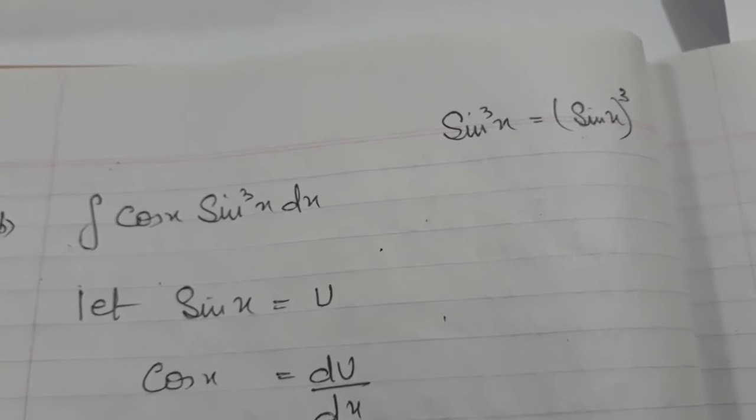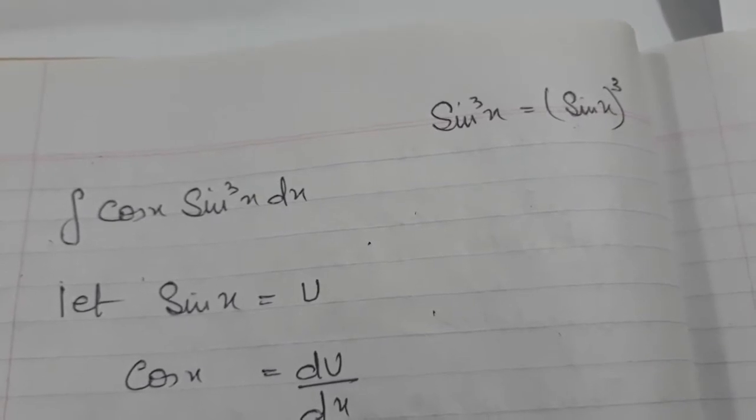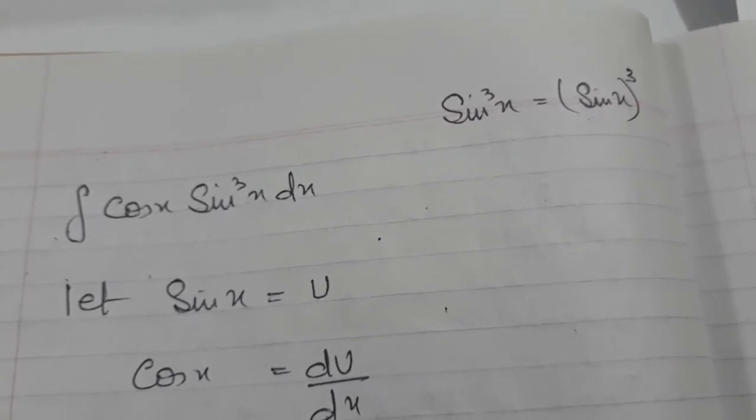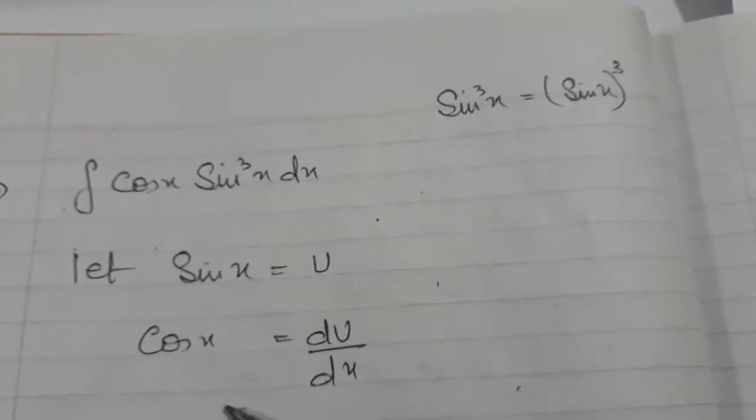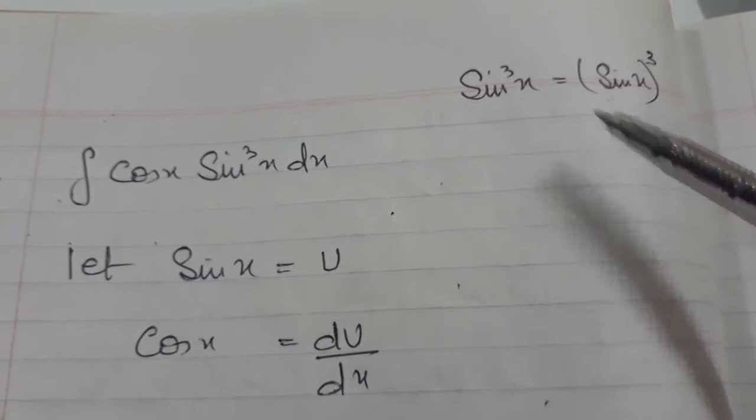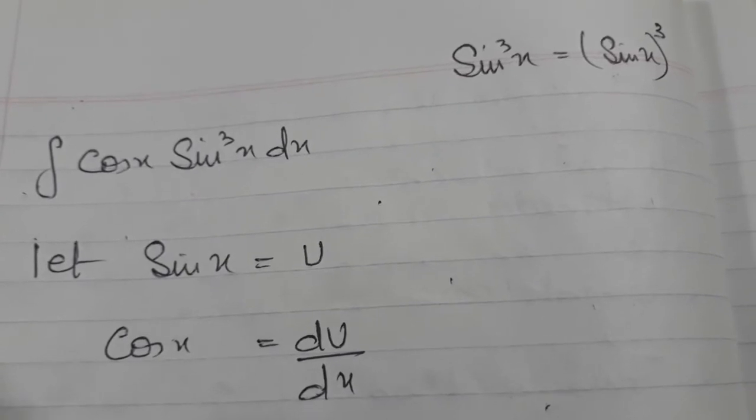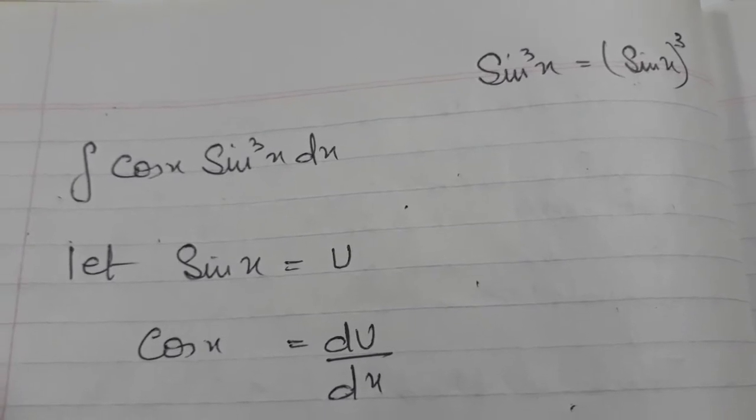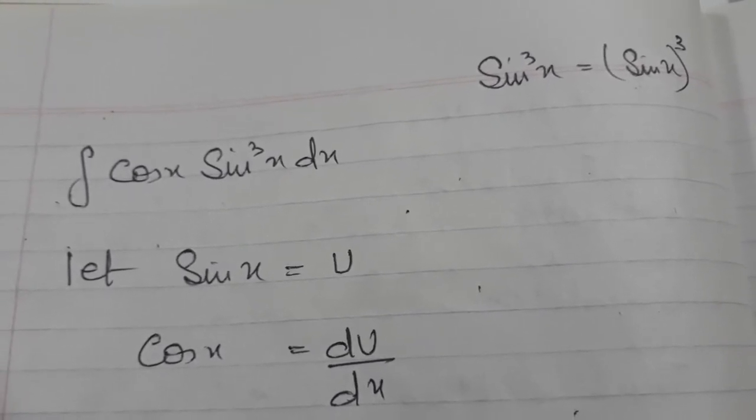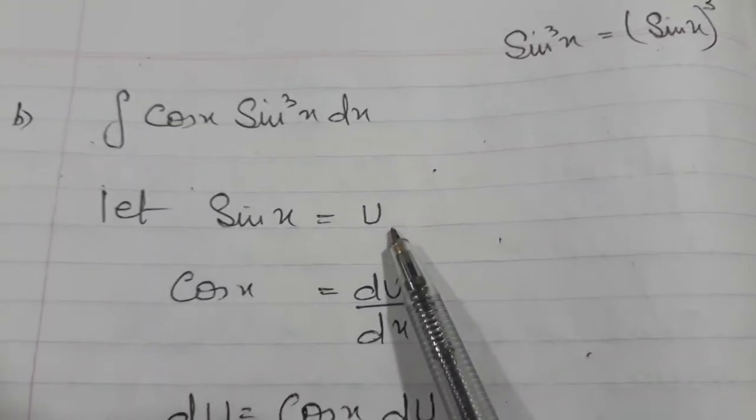Let's see another example of integration by substitution. The first one I have taken was also indefinite integral. This is also indefinite integral. After that I will take one definite integral example in which I will apply limits. Here I have taken sin x equals u as a substitution. What I have shown here is what does it mean, because most children misunderstand it and think that it is sin x into x into x. No, sin cube x means sin x into sin x into sin x.